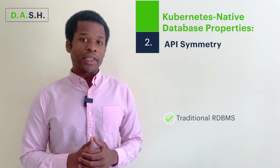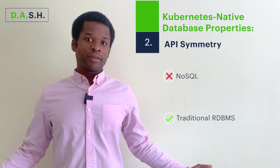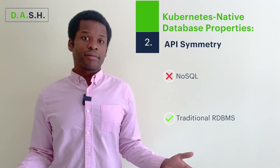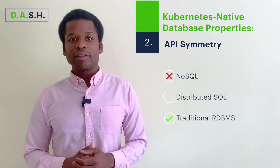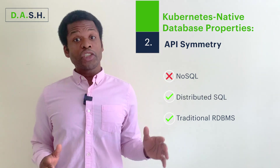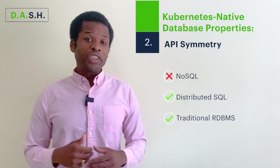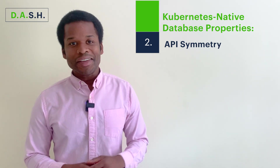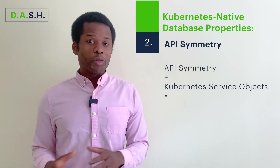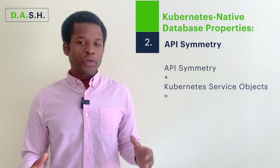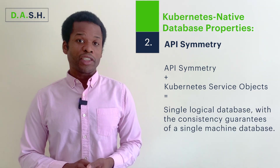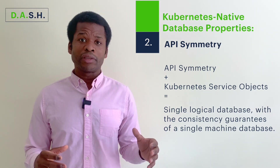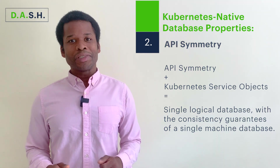However, with NoSQL systems that can scale out to multiple machines and can use asynchronous replication, API symmetry can be violated. Looking at distributed SQL databases, using techniques like consensus replication allows databases to achieve API symmetry without sacrificing disposability. To wrap up, combining API symmetry with Kubernetes service objects, we can have a single logical database with the consistency guarantees of a single machine database, despite there potentially being dozens or even hundreds of nodes working behind the scenes.